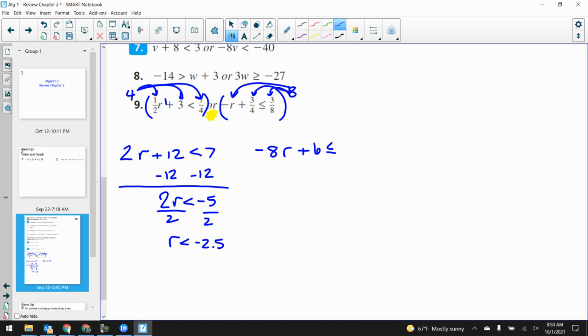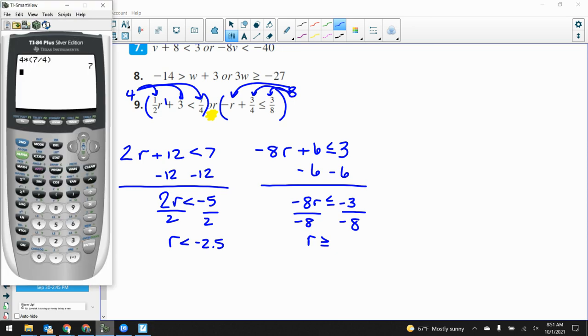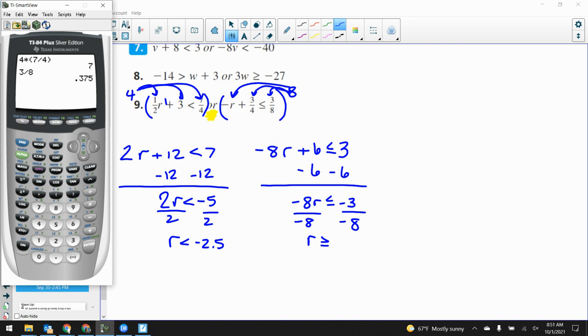And then if I multiply in here with three-eighths, well, that's going to cancel out my denominator, just leaving a three. And now that, in my opinion, is a lot easier to solve. We subtract the six over to the other side to get a negative three. We divide by negative eight. Dividing by the negative flips the symbol greater than or equal to three-eighths, which I believe is .375.